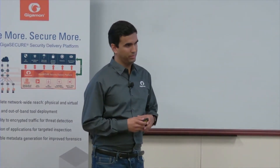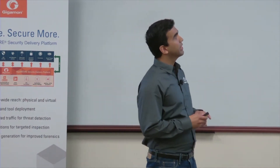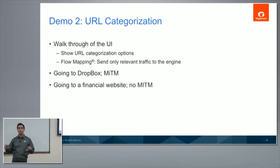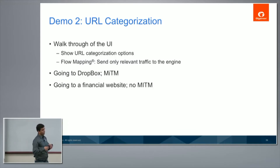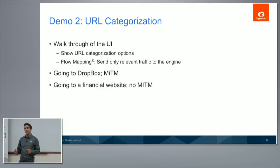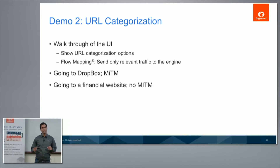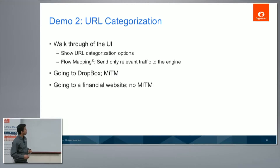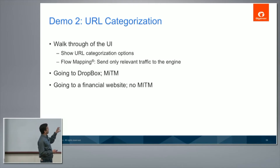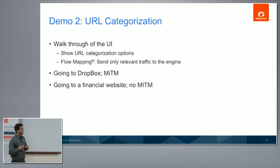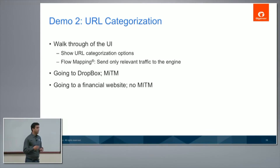For the URL categorization demo, starting with a brief UI walkthrough to show the options for turning on URL categorization. Then showing flow mapping, because SSL decryption is CPU-intensive and we only want to send relevant data to the decryption engine. Then a live man-in-the-middle demo showing Dropbox gets decrypted, followed by navigating to Wells Fargo to show that no man-in-the-middle occurs due to the policies set.